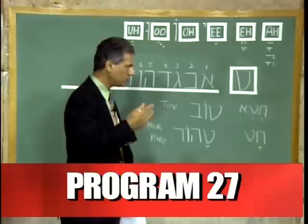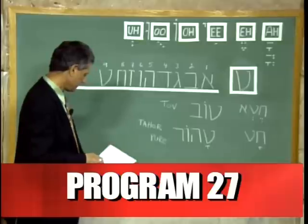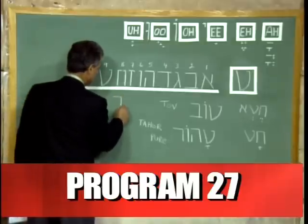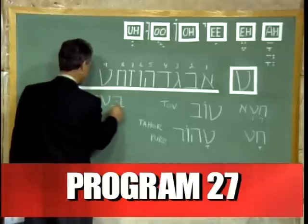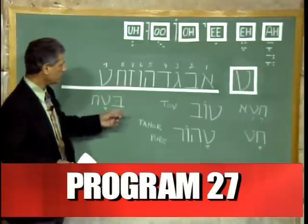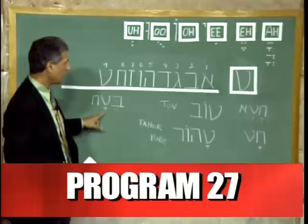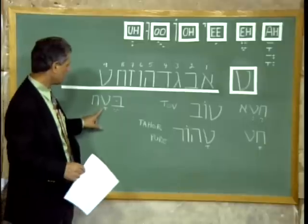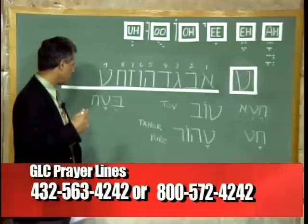You can see that I'm just using words that we can utilize with the letters we already learned. Here is another word. The word is Bet with an A sound, then we have a Tet with an A sound, and a Chet — Betach. Betach is confidence or trust.